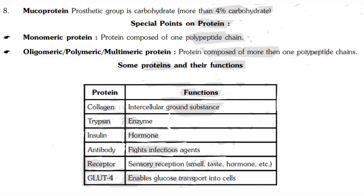Mucoproteins have carbohydrate as their prosthetic group, with more than four percent carbohydrate present. Special points on proteins: monomeric proteins are composed of one polypeptide chain, while oligomeric, polymeric, or multimeric proteins are composed of more than one polypeptide chain.